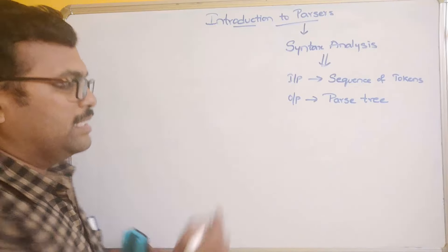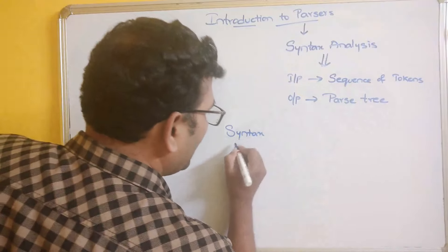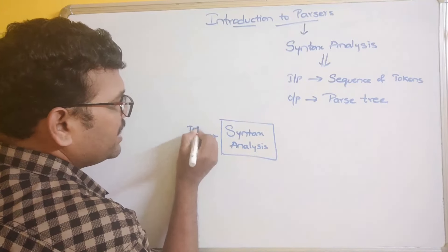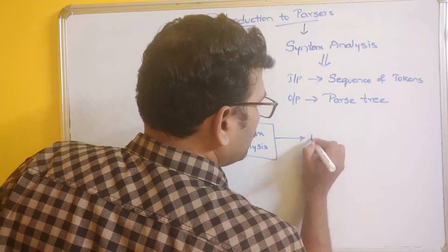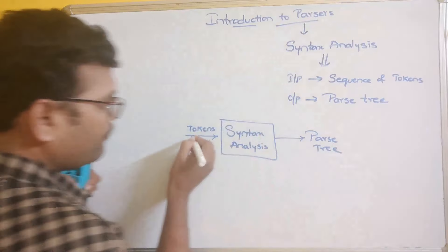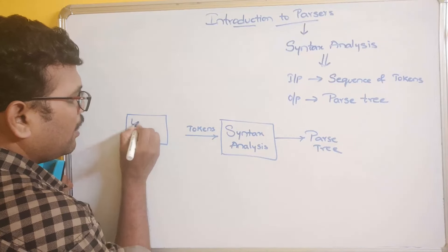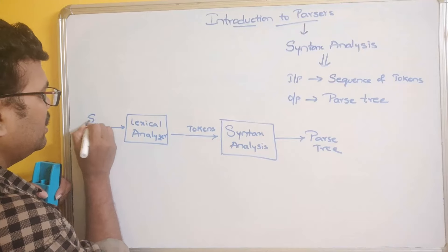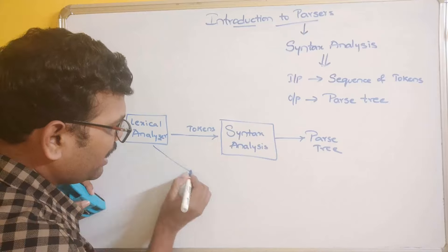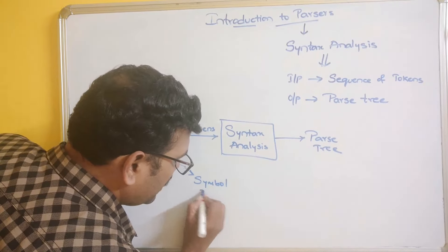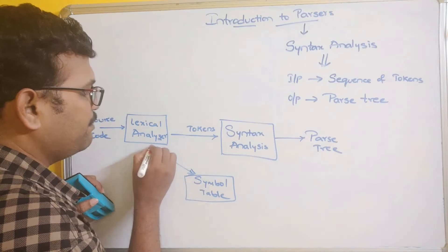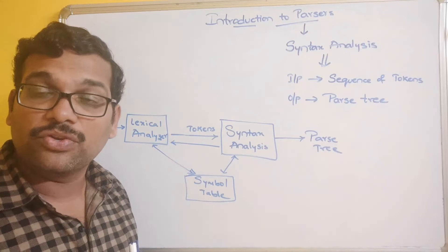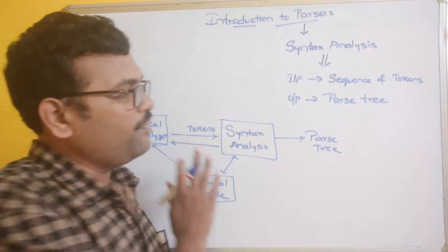The syntax analyzer takes tokens as input, which it receives from the lexical analyzer, and produces a parse tree. The source code is given to the lexical analyzer. The symbol table created by the lexical analyzer is also used by the syntax analyzer. It retrieves tokens one by one and generates a parse tree.